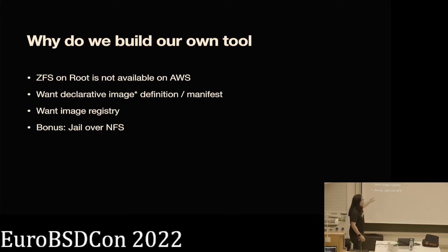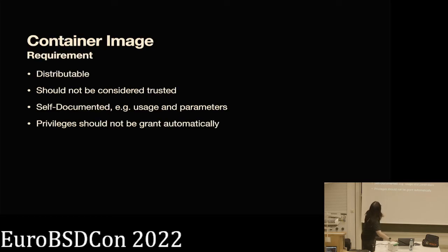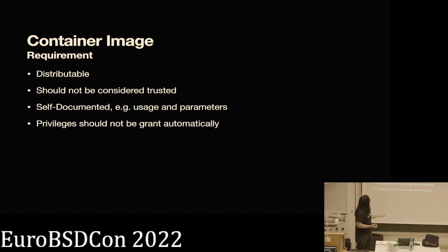We also discovered something really funny — you can actually have jails with root file systems on NFS. So you can actually run semi-headless nodes, and it's a container. That could actually be awesome. Now when I designed this, the first thing is obviously you need to distribute it — you need a registry. But unlike other tools and especially Bastille, I don't think you should always consider a container image as trusted. You may be getting it from somewhere else, from colleagues, but you don't know what's actually going on. I don't want something that can just redirect PF.